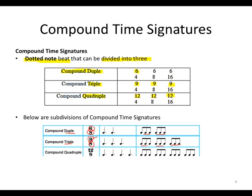Then we have compound quadruple time, where it's twelve quaver beats in a bar, which make up four dotted crotchet beats, where each beat is subdivided into four groups of three quavers.